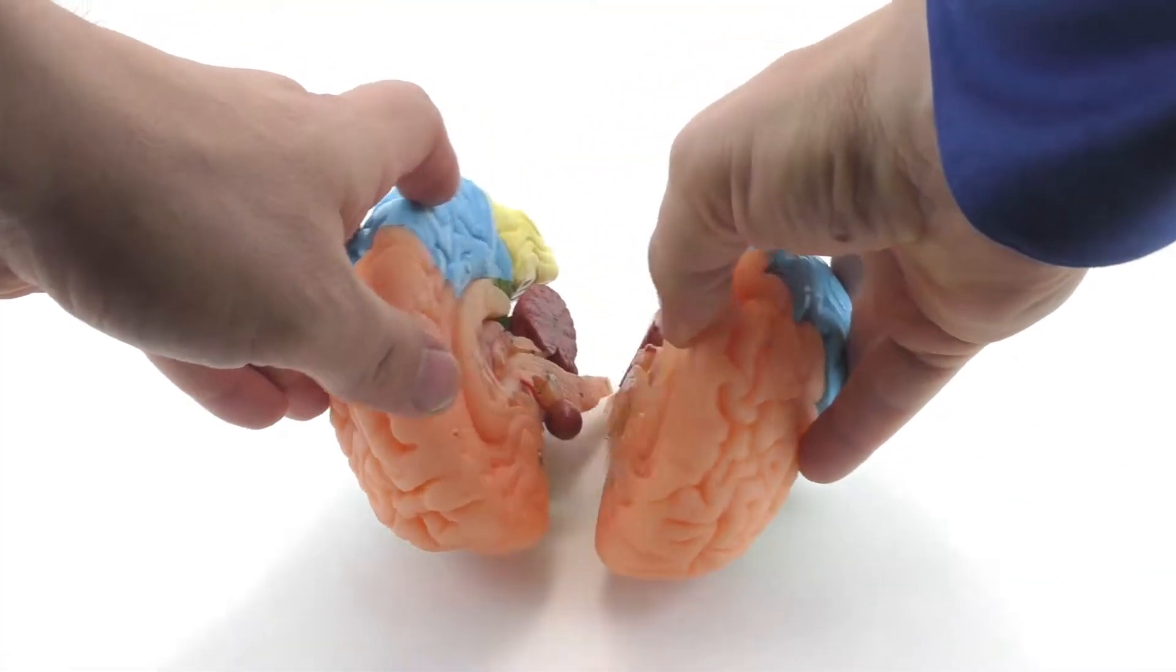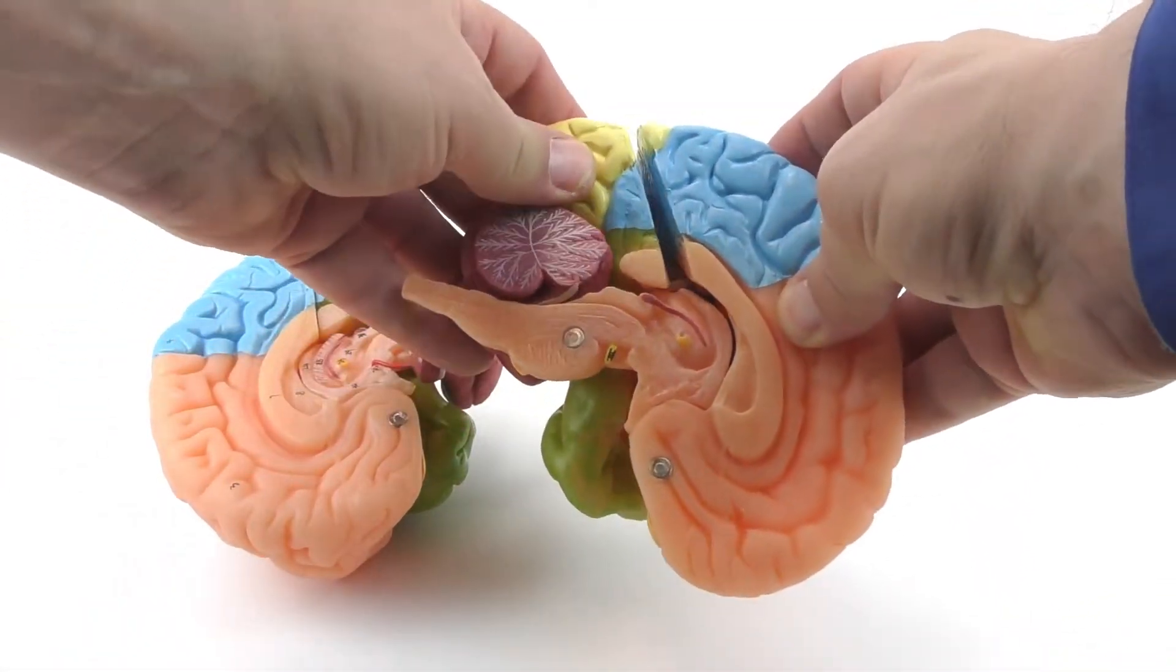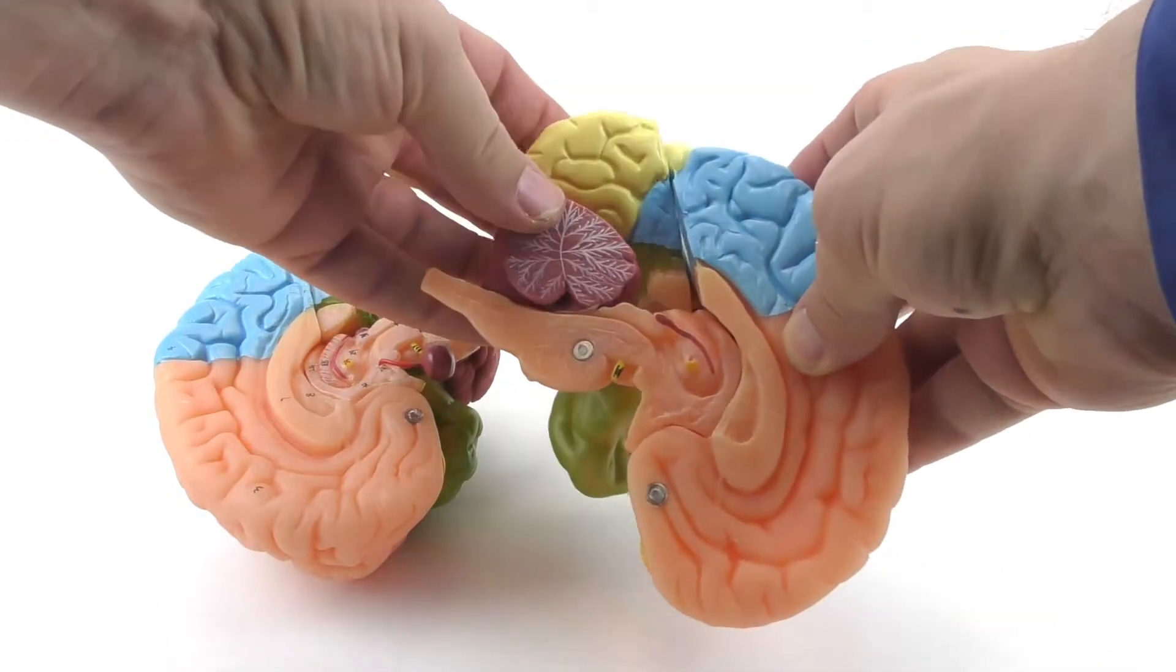Embedded within each part of the brain model are magnets which make putting this together and taking it apart a very simple task.